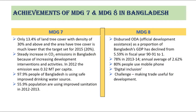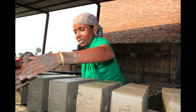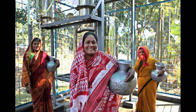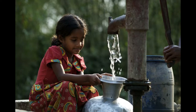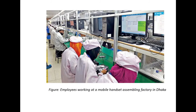The achievement of MDG 7 in Bangladesh includes: only 13.4 percent of land tree cover with density of 30 percent and above, and the area of tree cover is much lower than the target of 20 percent set for 2015. There has been a steady increase in carbon dioxide emissions due to increasing development activities, and 97.9 percent of people in Bangladesh are using safe improved drinking water sources. For MDG 8, ODA as a proportion of Bangladesh's GDP declined from 5.59 percent in 1990–91 to around 1 percent, and 80 percent of people use mobile phones.